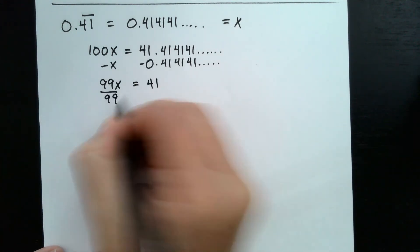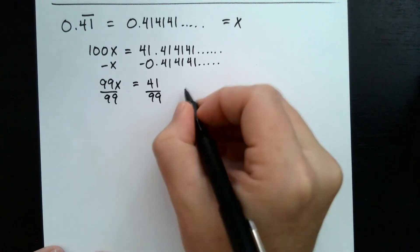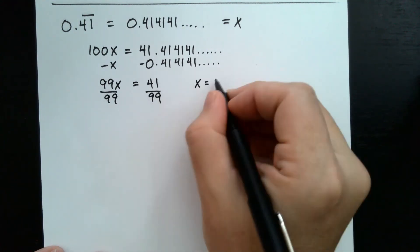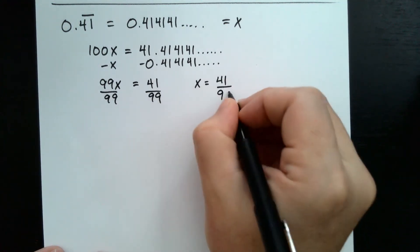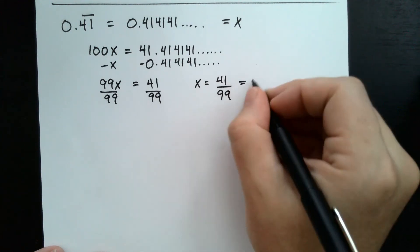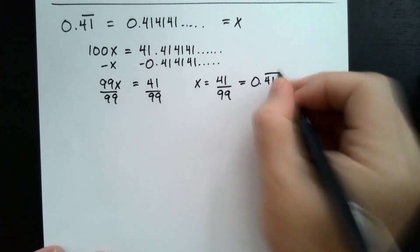And if we divide by the 99, we get x is equal to 41 over 99, which is the same thing as 0.41 repeating.